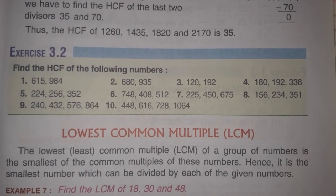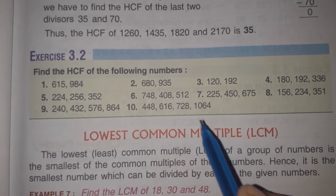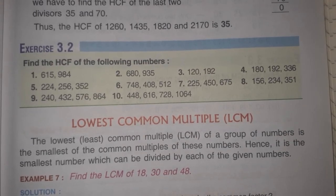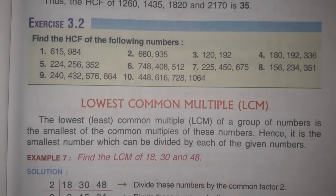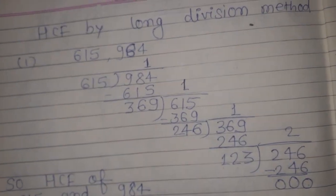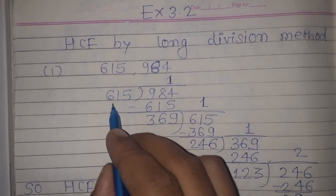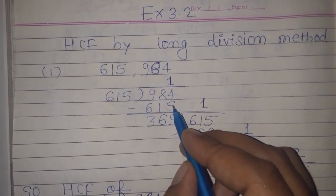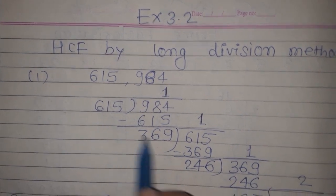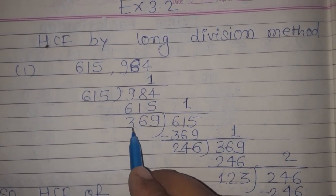Now we are going to solve exercise 3.2, chapter number 3, SCF and LCM. The question is: find the highest common factor of the following numbers by long division method. Here we have to find the highest common factor, but the method has changed. In exercise 3.1 we used prime factorization; in exercise 3.2 we use long division method. In long division method, we divide the greater number by the smaller number. The question is 650 and 984. We divide 984 by 650: 650 × 1 = 650, remainder = 334.